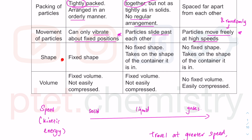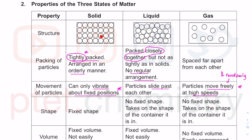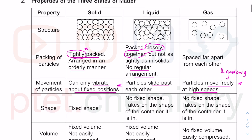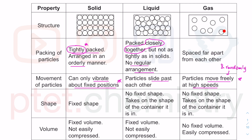In terms of volume, solids cannot be compressed easily because they have a fixed volume and the particles are already tightly packed — you can't force particles to occupy the same space at the same time. With liquids there is a little bit of space in between, and with gases there is a lot of space, so gaseous particles can get closer together and be pressurized. For example, liquefied natural gas used for cooking is actually gas pressurized into a liquid state inside the canister, then converted back to gas through a pressure regulator as it flows out.